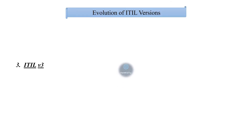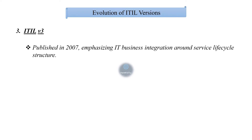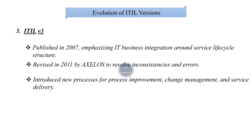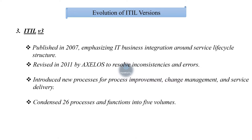ITIL v3 was published in 2007, emphasizing IT-business integration around a service life cycle structure. It was revised in 2011 by AXELOS to resolve inconsistencies and errors, introduce new processes for process improvement, change management, and service delivery, and condense 26 processes and functions into 5 volumes.